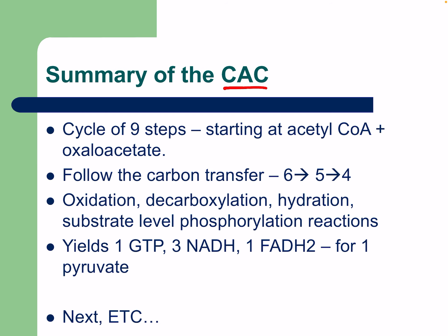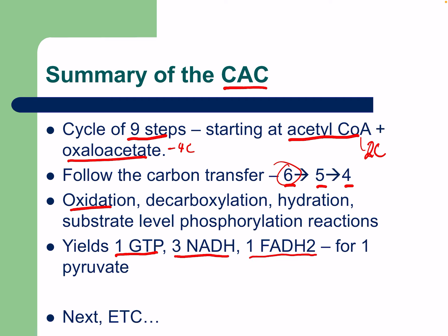Summary of the citric acid cycle: it is a nine-step cycle starting with acetyl-CoA and oxaloacetate. Follow the carbon transfer from six to five to four carbons — the two-carbon acetyl group plus four-carbon oxaloacetate gives the first six-carbon molecule, citrate. Reactions include oxidation, decarboxylation, hydration, and substrate-level phosphorylation. Yield per pyruvate is one GTP, three NADH, one FADH2 — times two for one glucose: two GTP, six NADH, two FADH2. All of these go into the electron transport chain next. See you in the next lecture on the electron transport chain!